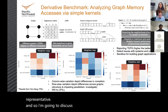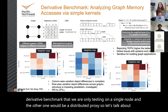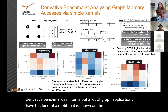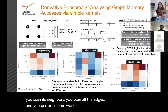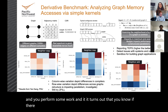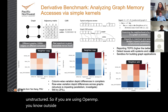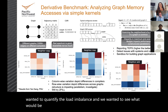I'm going to discuss two use cases. One is a derivative benchmark tested on a single node, and the other is a distributed proxy application. A lot of graph applications have a common motif: for every vertex, you scan its neighbors, scan all the edges, and perform some work. It turns out that if there is a disparity between the maximum and average number of edges, performance will be impacted — the parallelism becomes unstructured. If you are using OpenMP outside a loop on vertices, each thread can have a different amount of work, leading to load imbalance.